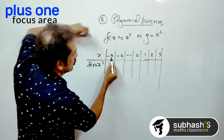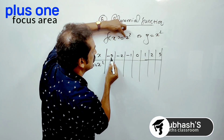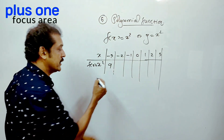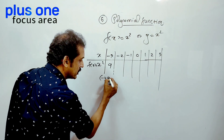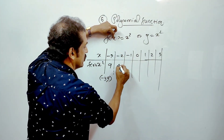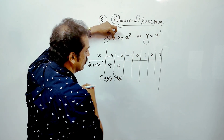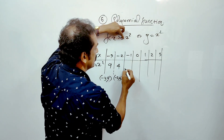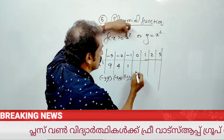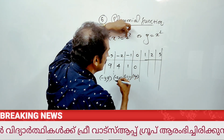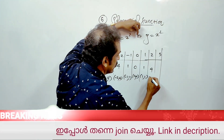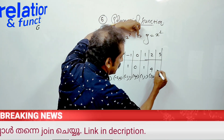So x equals minus 3, the whole square — what is minus 3 squared? It is 9. Next, x is minus 2 squared is 4. Minus 1 squared is 1. 0 squared is 0. 1 squared is 1. 2 squared is 4. 3 squared is 9.